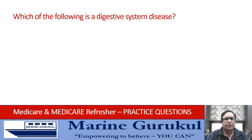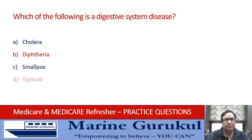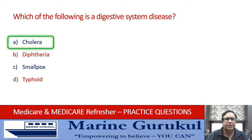Which of the following is a digestive system disease? Cholera, diphtheria, smallpox, or typhoid? The answer is A — cholera is a digestive system disease.